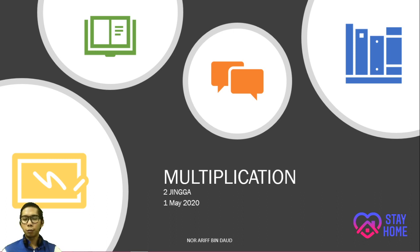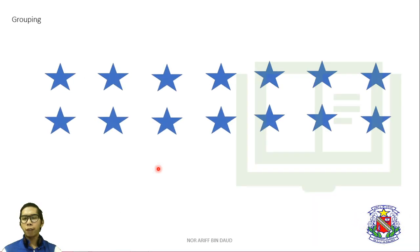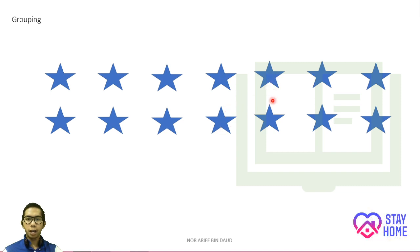The first thing you must know in multiplication is about grouping. I have stars here. So, how many stars do we have here? 1, 2, 3, 4, 5, 6, 7, 8, 9, 10, 11, 12, 13, 14. So, I have 14 stars here.